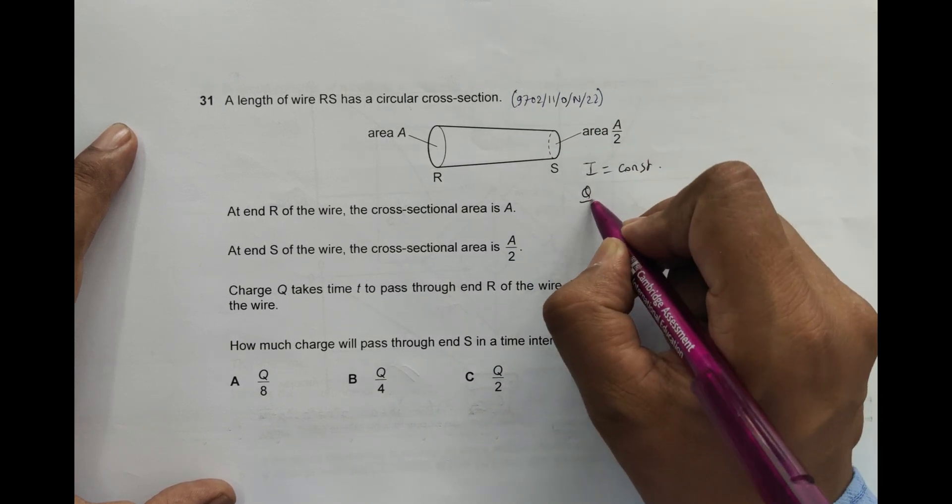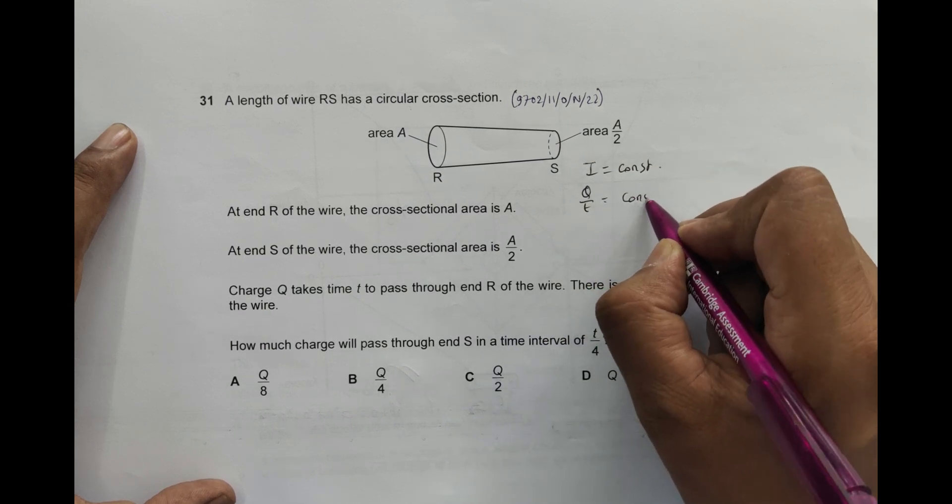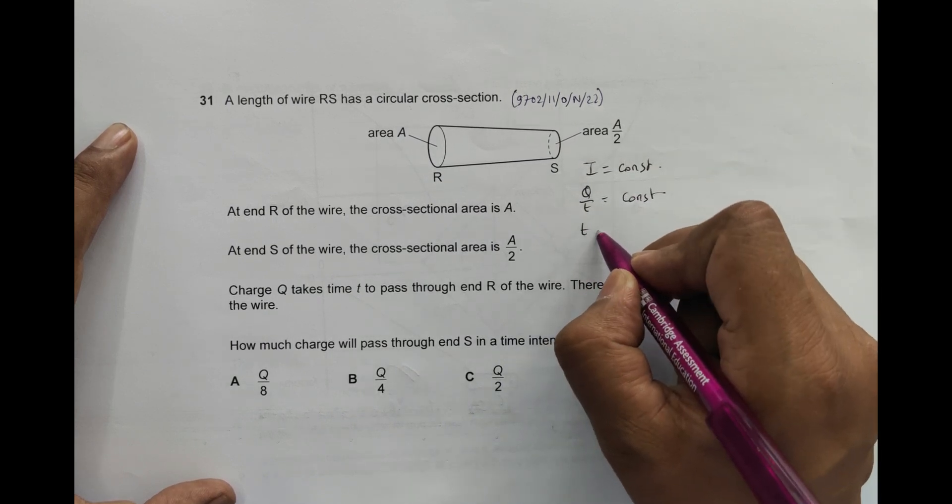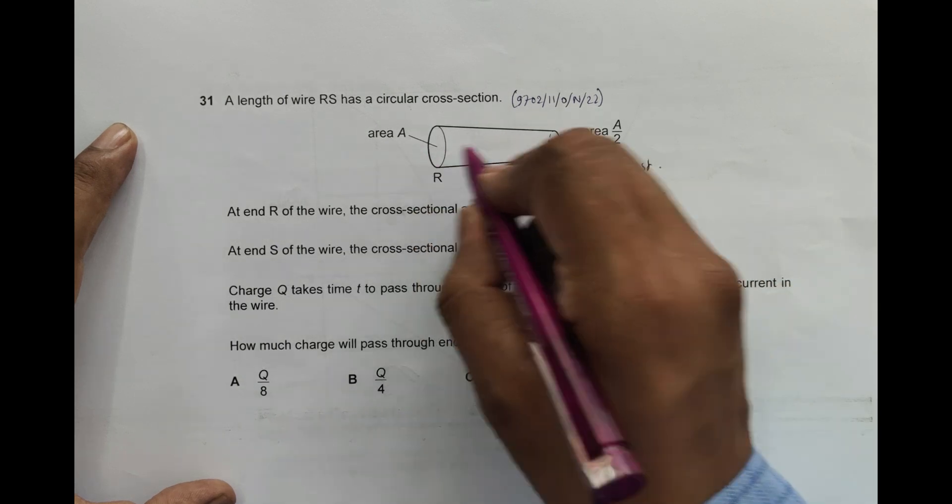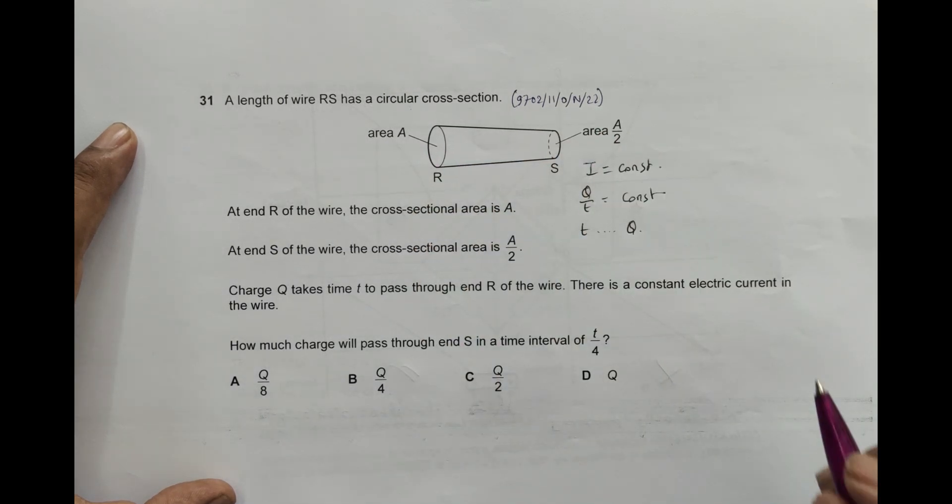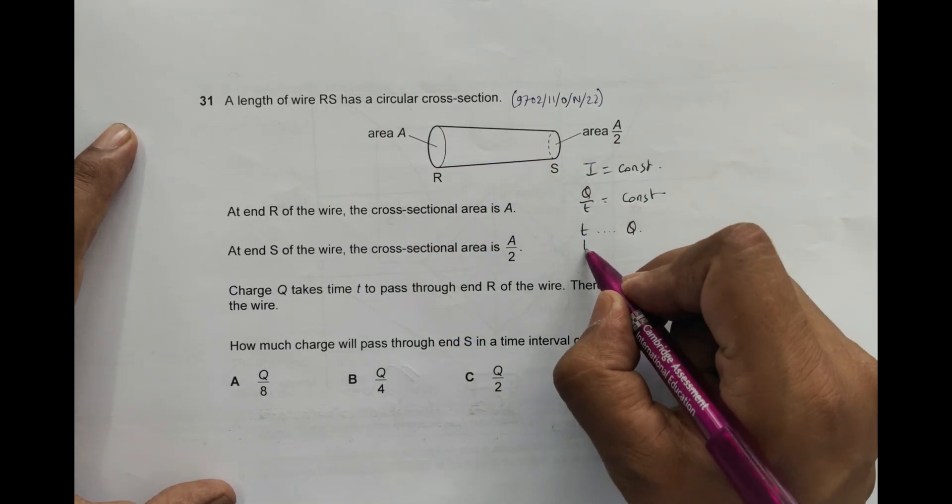It means Q by t should be equal to constant. So at a time t, the charge that flows is Q throughout the conductor. So that means if it is t by 4, then the charge should be Q by 4, nothing else.